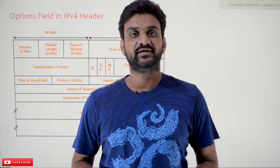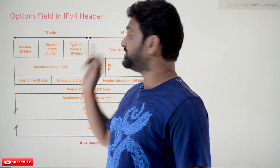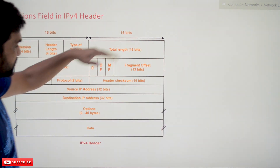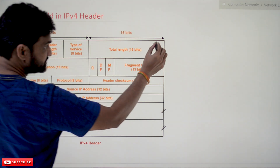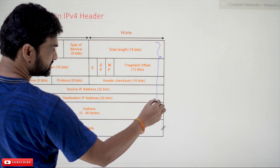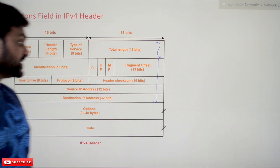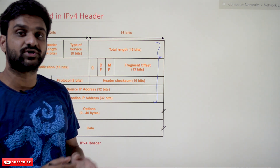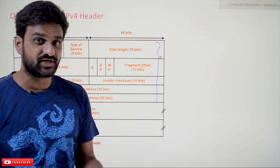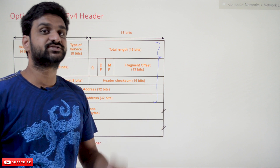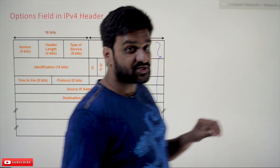Hi, welcome to Learning Monkey. I am Vikram. In this class we'll try to understand the options field in the IPv4 header. The mandatory fields have already been described in our previous videos. Our suggestion is to follow the entire course so that you can have a better understanding of the concepts. The link for the playlist is provided in the description below.